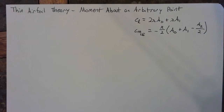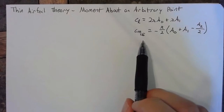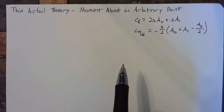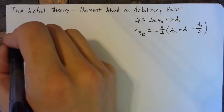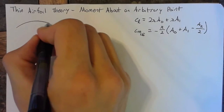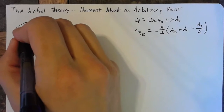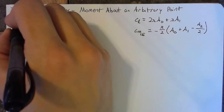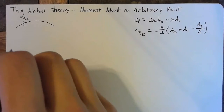Howdy. In the previous two lessons, we derived the lift and moment about the leading edge for a cambered airfoil using thin airfoil theory. In this lesson, we're going to be taking those two concepts and extending them just a bit in order to find the moment about an arbitrary point x per unit span.